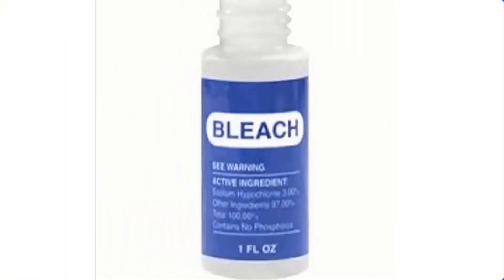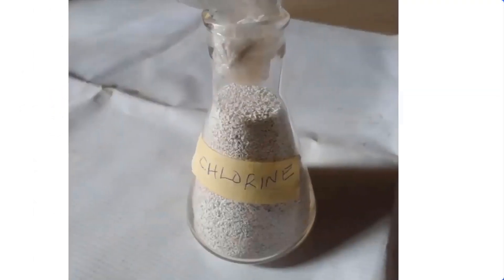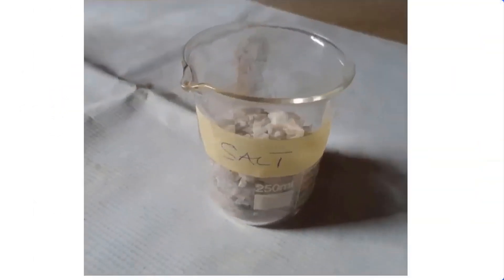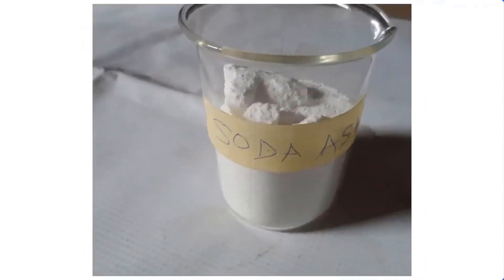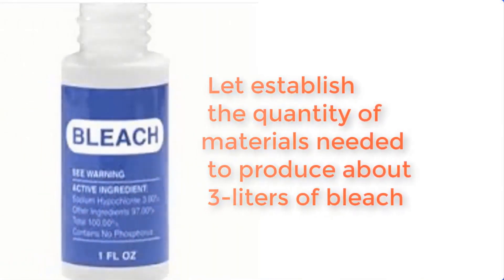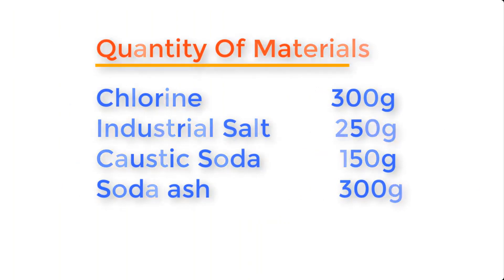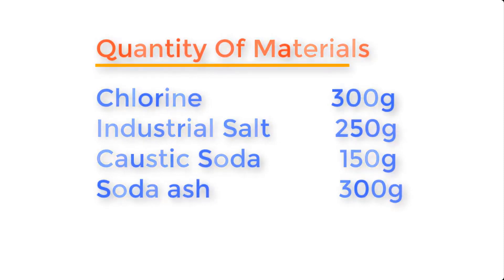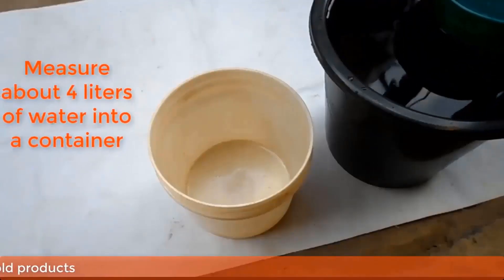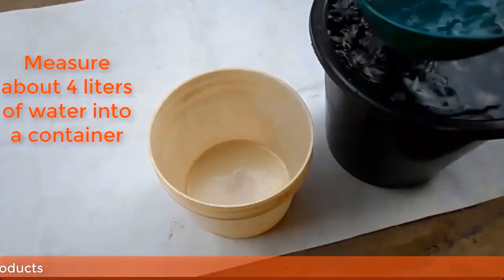Bleach can be made from the following chemicals: chlorine, industrial salt, caustic soda, and soda ash. To produce about three liters of bleach, you will need: chlorine 300 grams, industrial salt 250 grams, caustic soda 150 grams, and soda ash 300 grams. Now measure about four liters of water into an empty container.